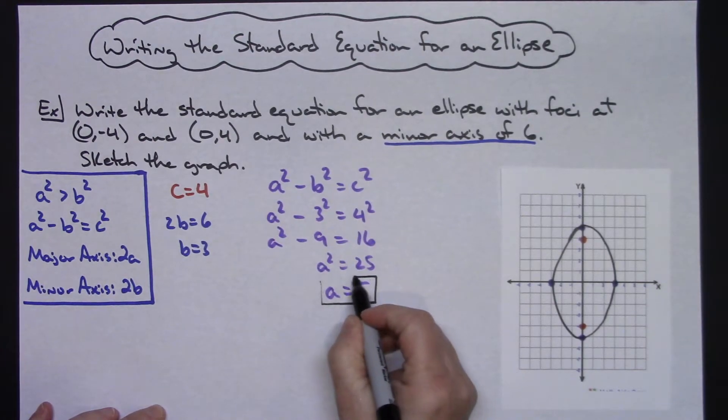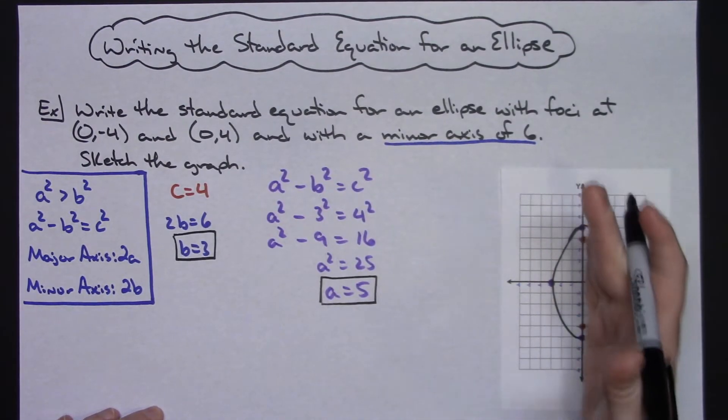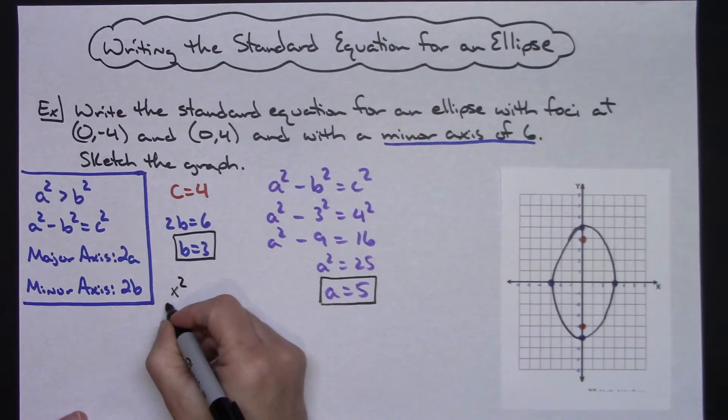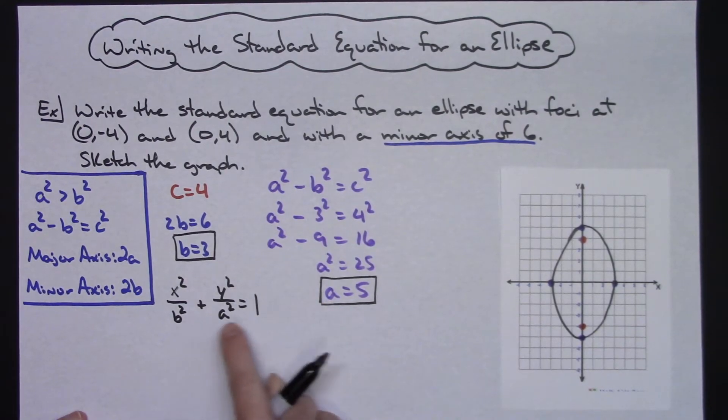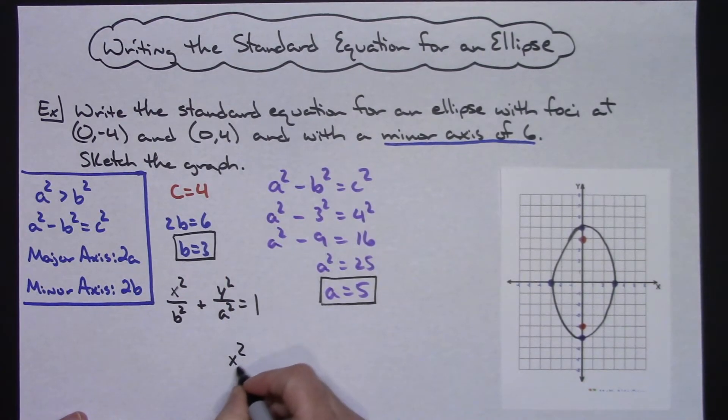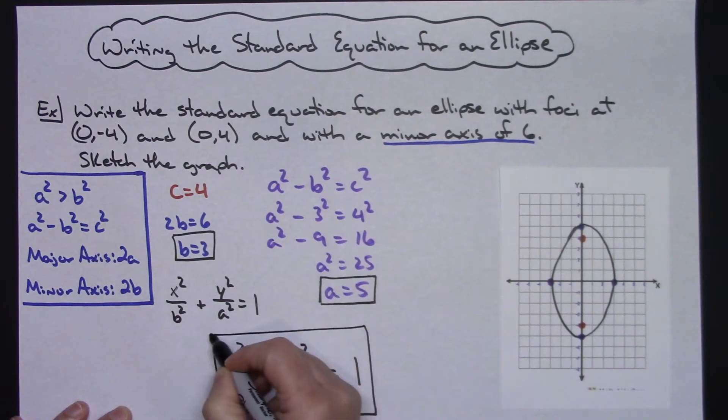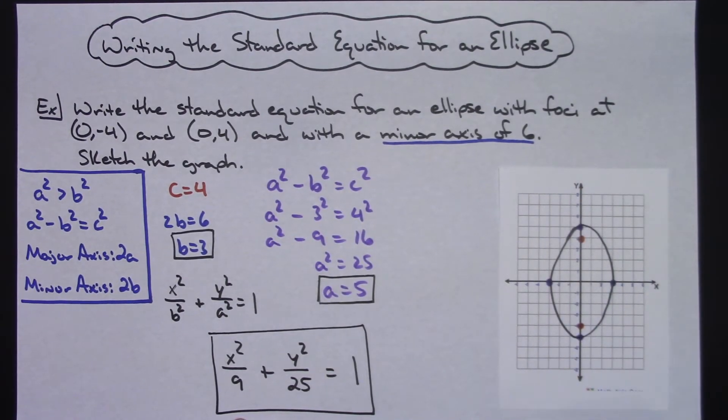And I know all of my variables here. So A is 5, B is 3. So now I'm ready to write the equation. Since I know that this is a vertical ellipse, then I know my equation is going to be X squared over B squared plus Y squared over A squared equals 1. So it's a matter of replacing A and B and squaring them. So my B is 3. 3 squared is going to be 9. So the equation then, X squared over 9 plus Y squared, A is 5, squaring that will be over 25, and then equals 1.